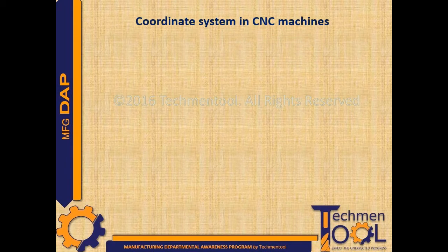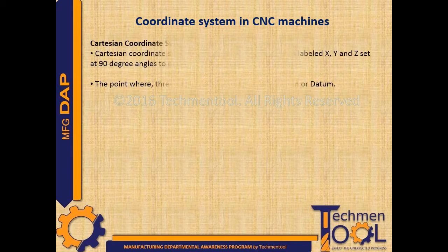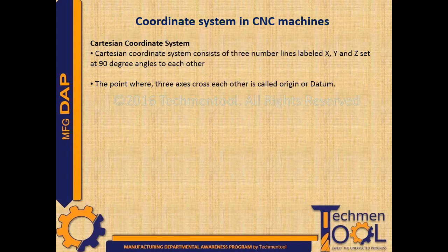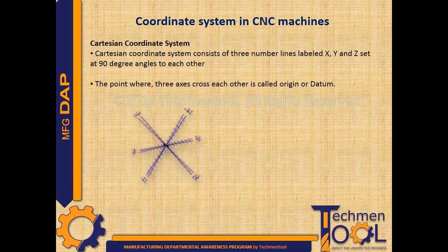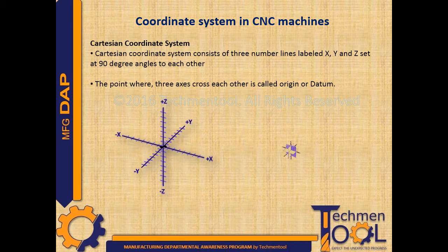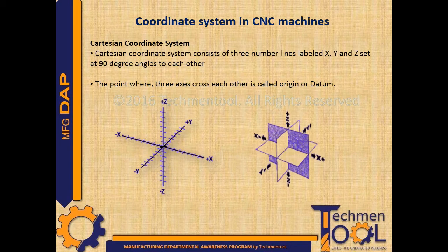Let us discuss the coordinate system in CNC machines. The Cartesian coordinate system consists of three number lines labeled X, Y, and Z, set at 90 degree angles to each other. The point where the three axes cross each other is called the origin or datum.